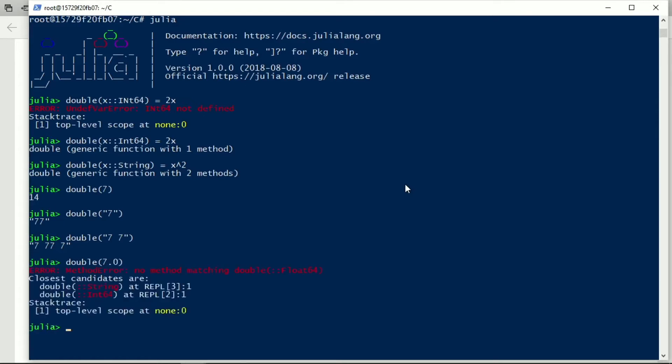But if I try to double 7.0, it says no, there is no method for floats. We've indicated that we accept int64, we've indicated that we accept string, and as we've said before, a float is not the same sort of thing as an int.